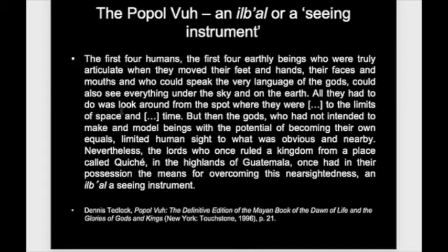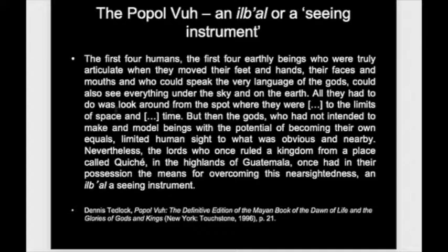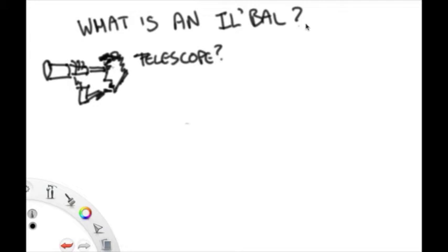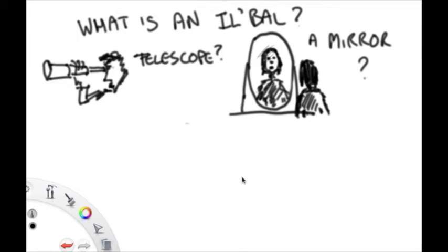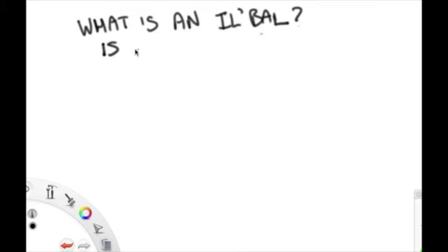Now, you might be still thinking, what is this seeing instrument? It's not a telescope, it's not a mirror, it's not even a scrying glass as we might commonly expect to see in European, pre-Christian and anti-Christian cultures. It's a text, well, a text loosely defined.